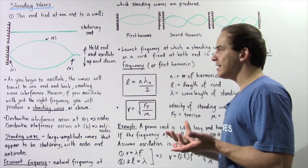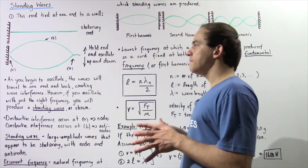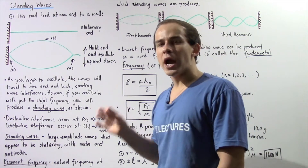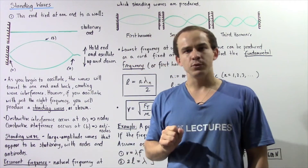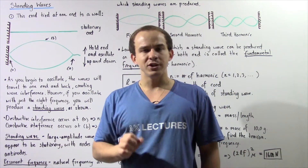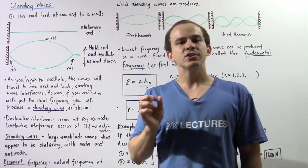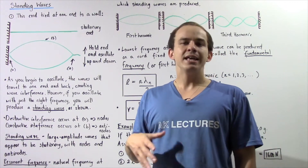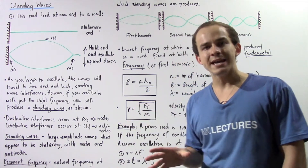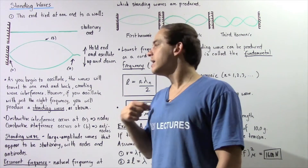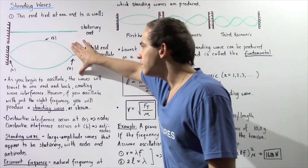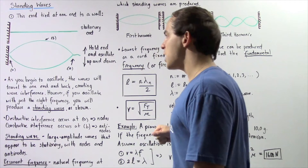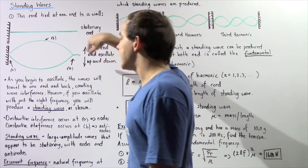So what we're essentially creating is a jumble of waves that will interfere with one another. Now, if we oscillate our cord at just the right frequency — called the natural frequency or the resonant frequency — we create a wave called a standing wave. A standing wave is given that name because it appears to be standing, stationary, even though it's actually moving back and forth.